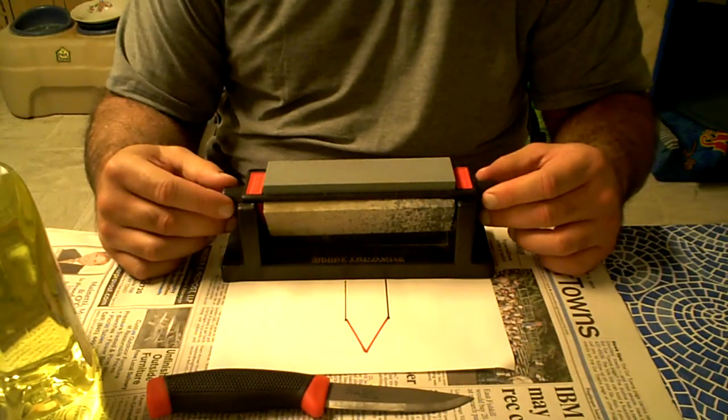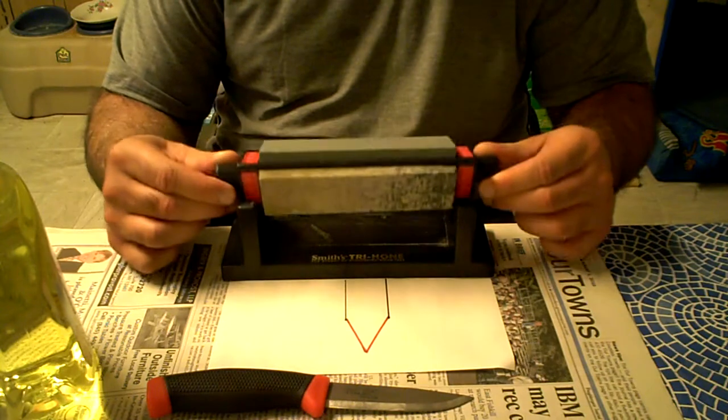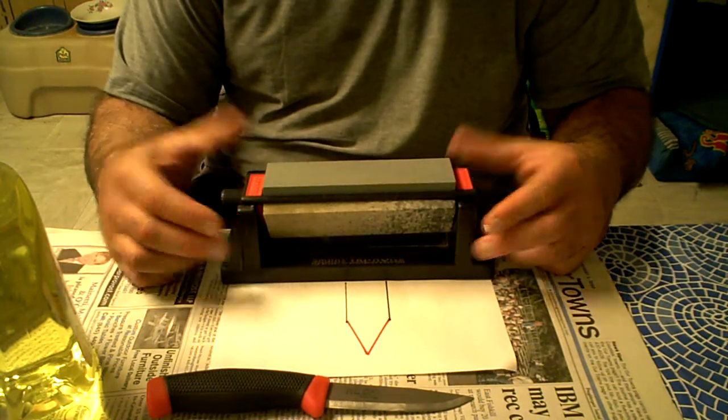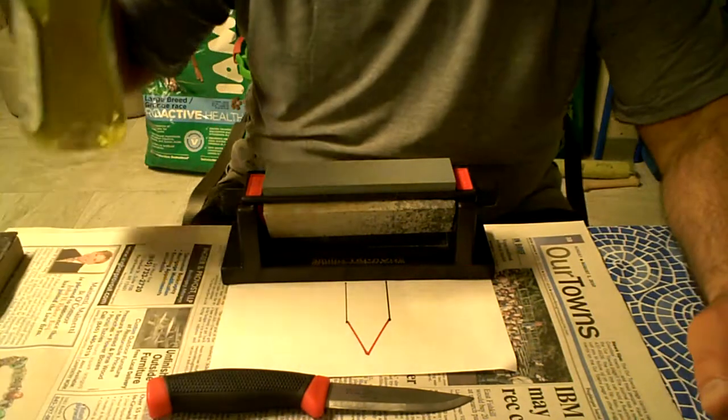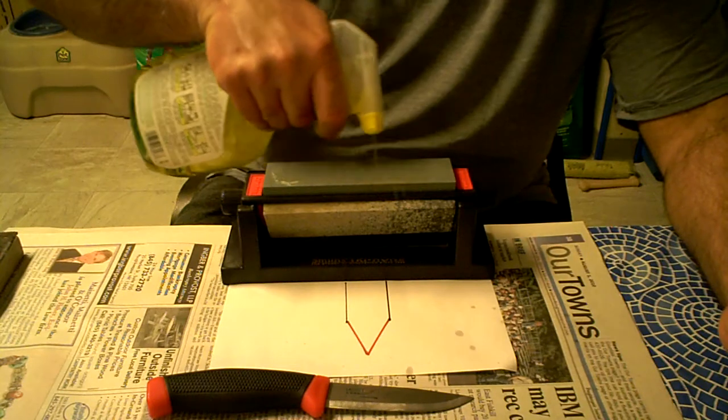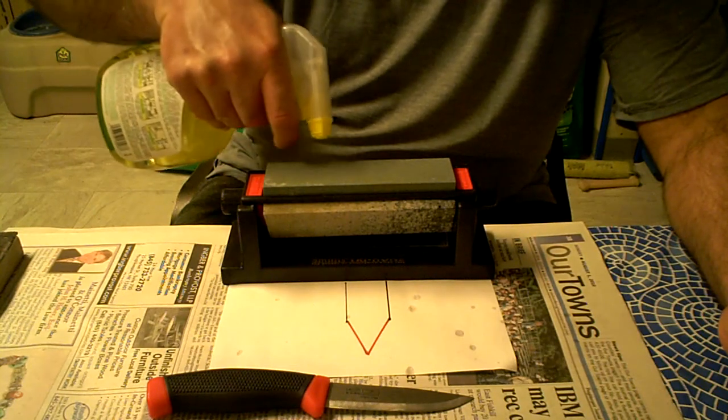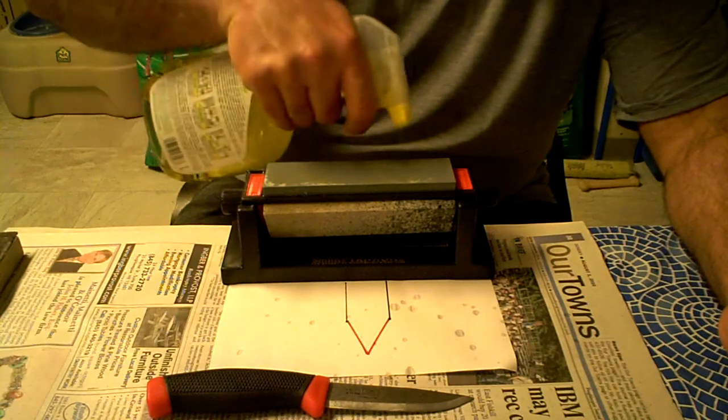So let's get started. I'm going to use that Smith Tri-Hone I showed you in a previous video. It's a good basic kit, not expensive and easy kit to learn how to sharpen on. The coarse stone, let's get that wet. You really got to soak that because it's much more porous than the natural Arkansas stones.